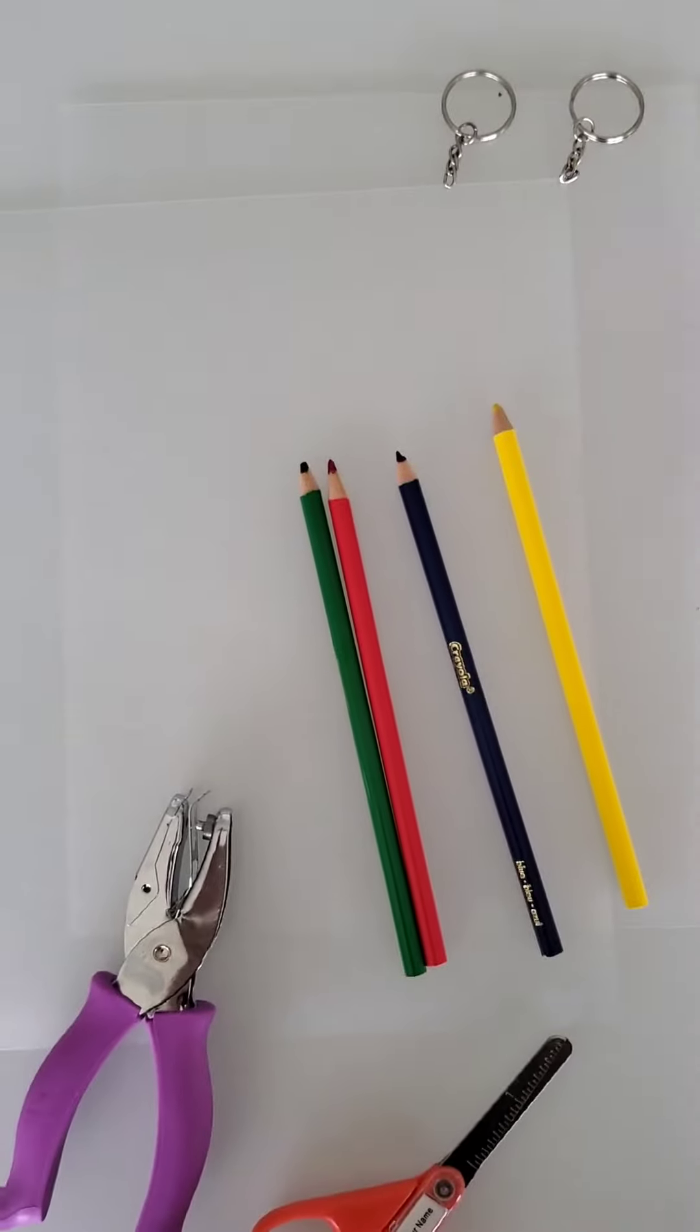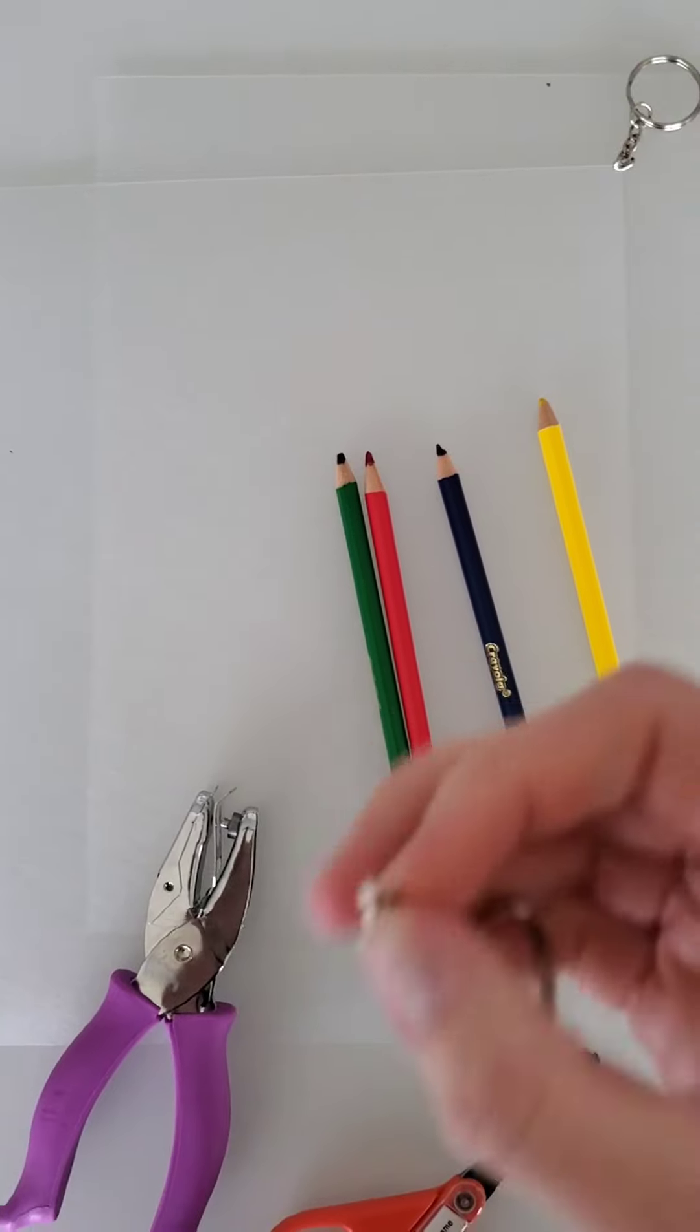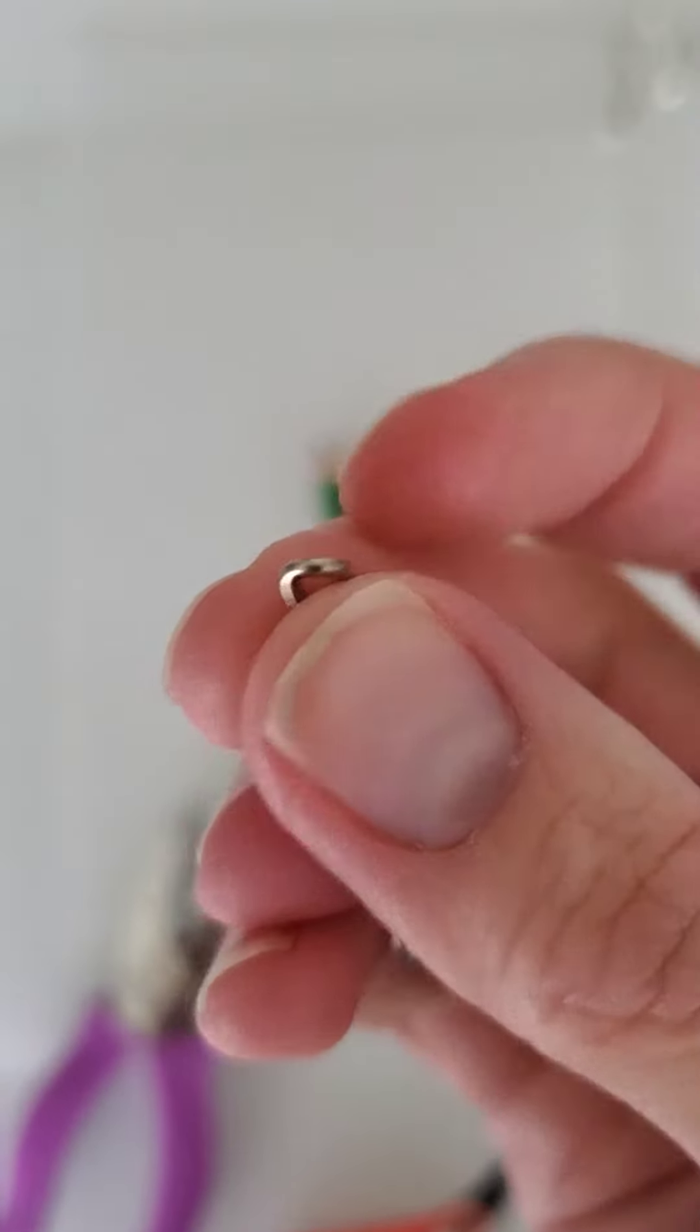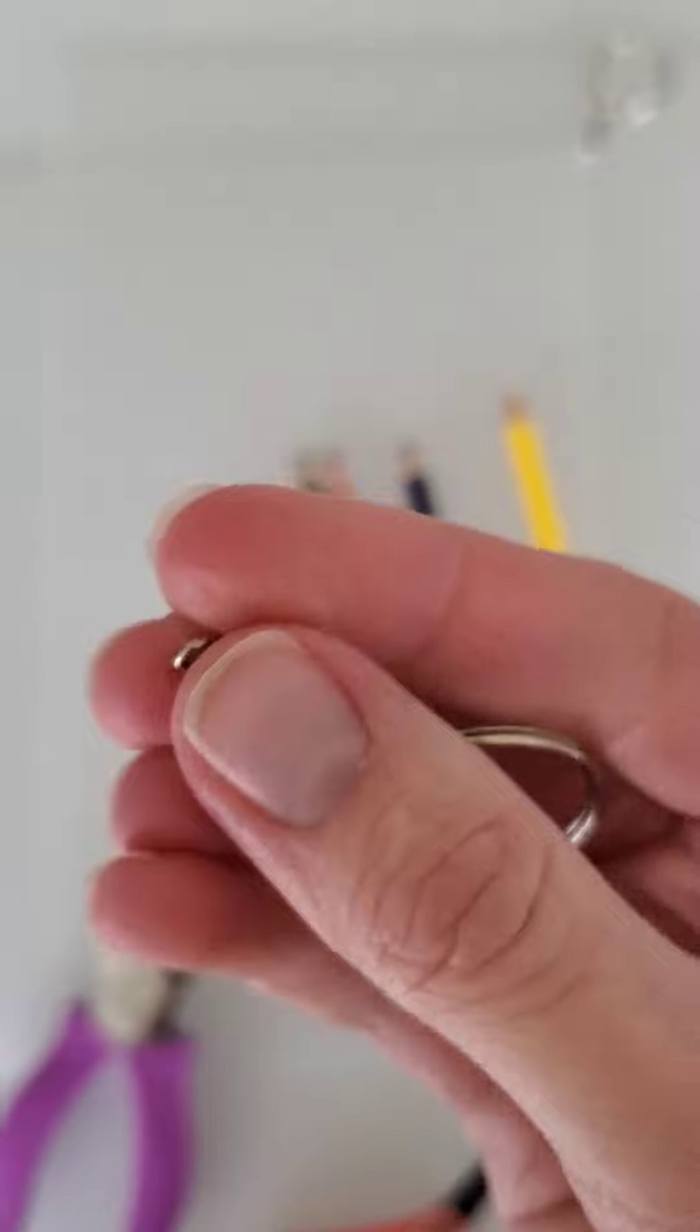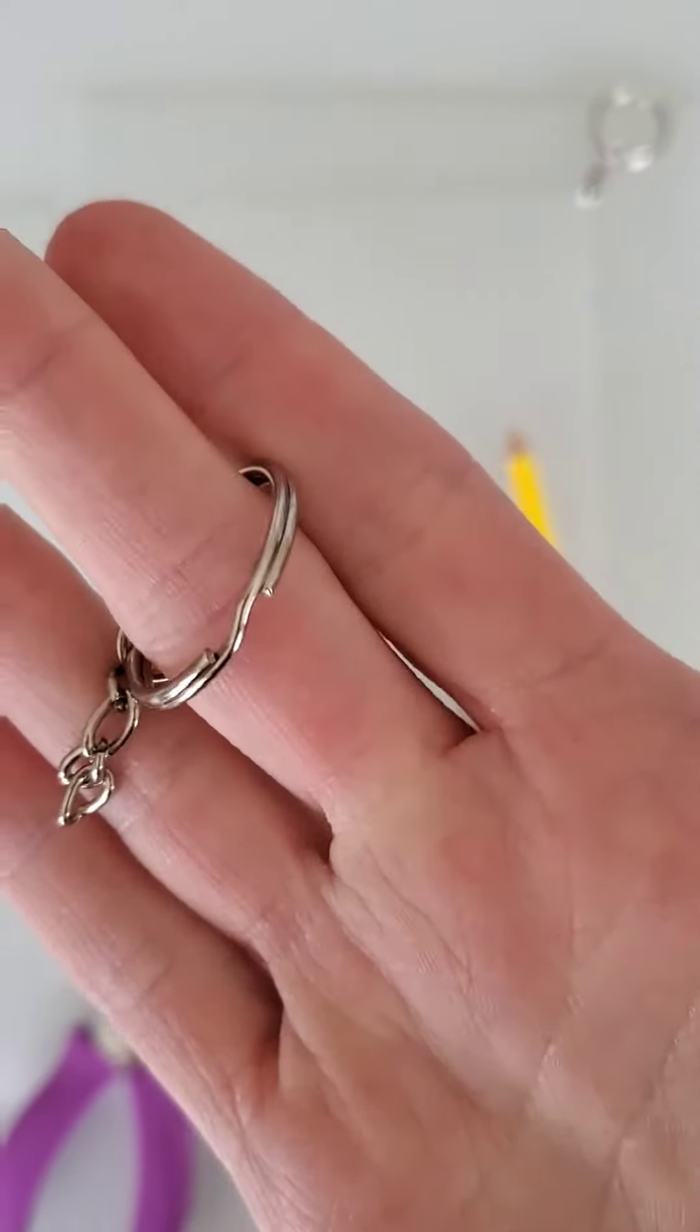It's also useful to have pliers if you want to attach the shrink paper to the small side of the keychain. If you don't have pliers, you can just put them on the big ring.